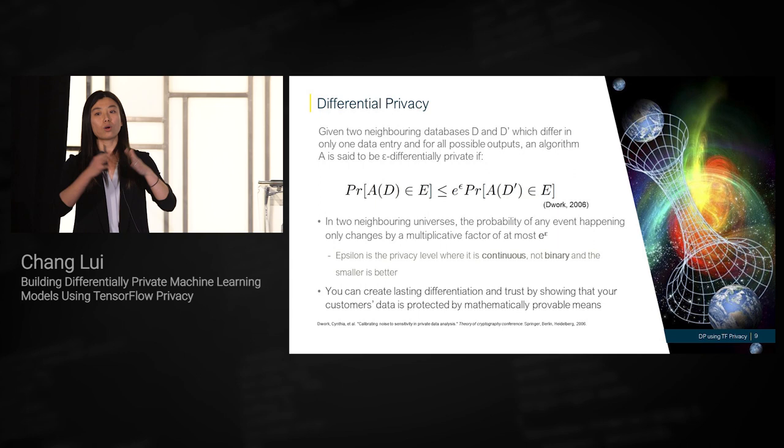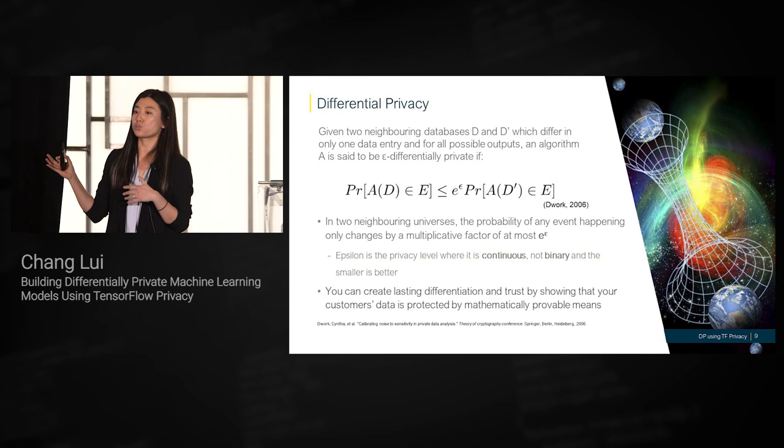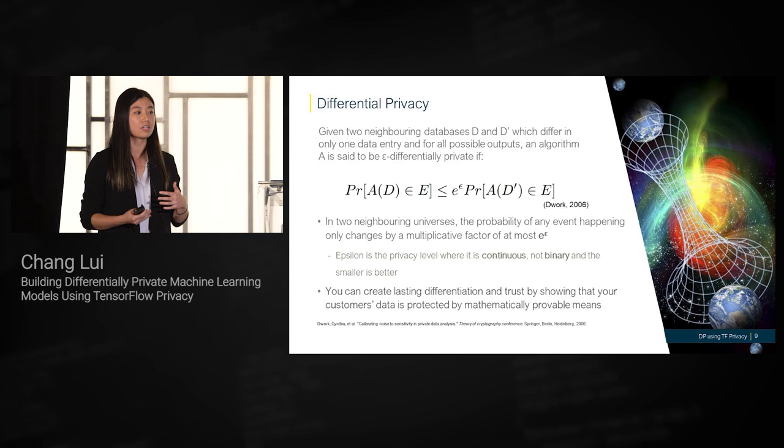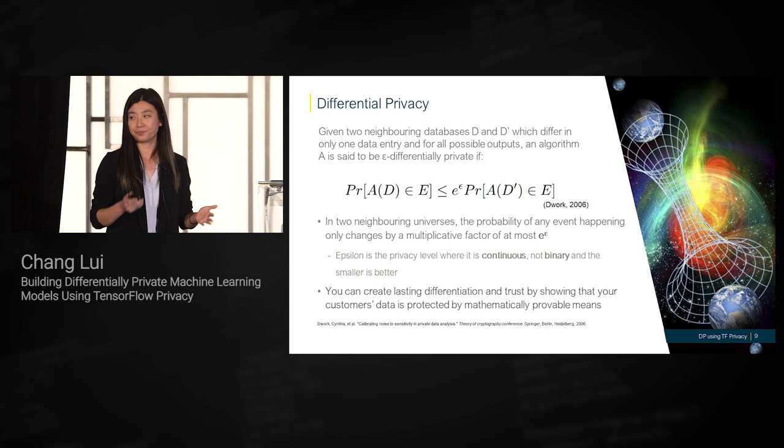Note that we have this e-to-the-epsilon multiplicative factor. This epsilon is what we call the privacy budget. It's not a binary term — you don't just turn it on or off. It's really a scale. The smaller your epsilon, the more privacy you achieve in your algorithm.